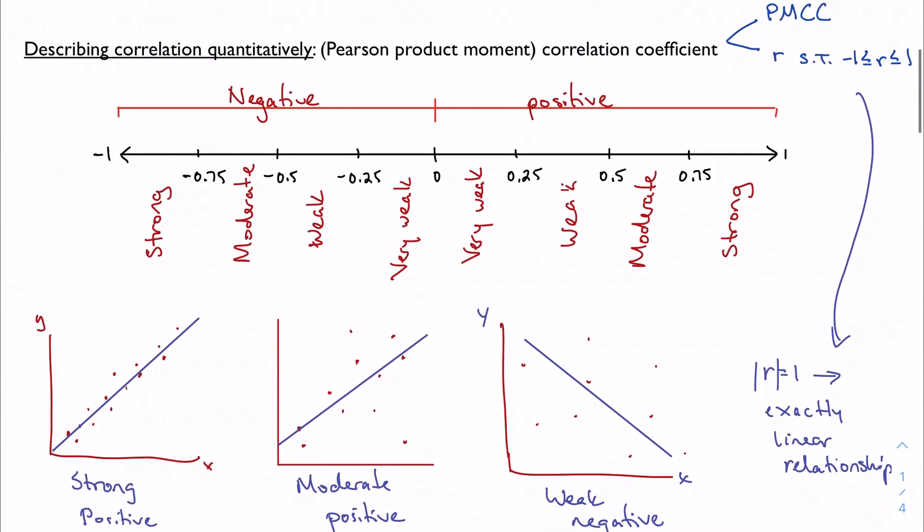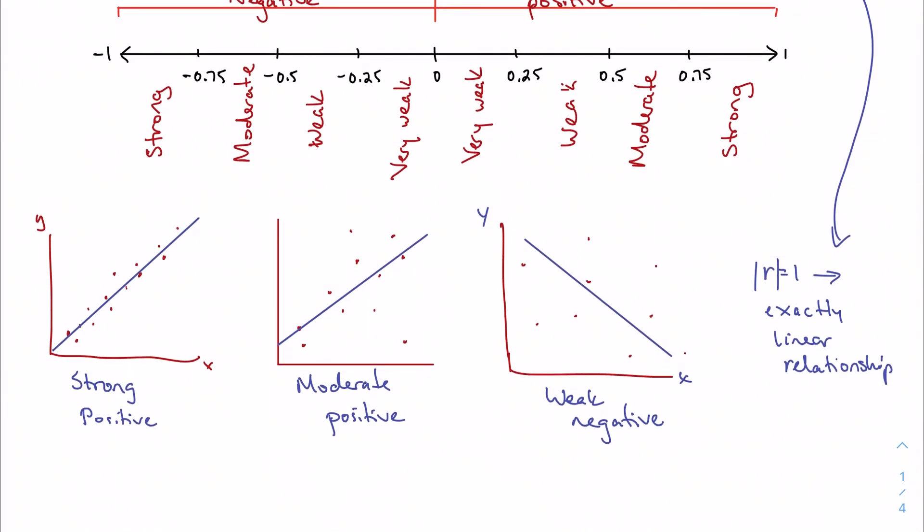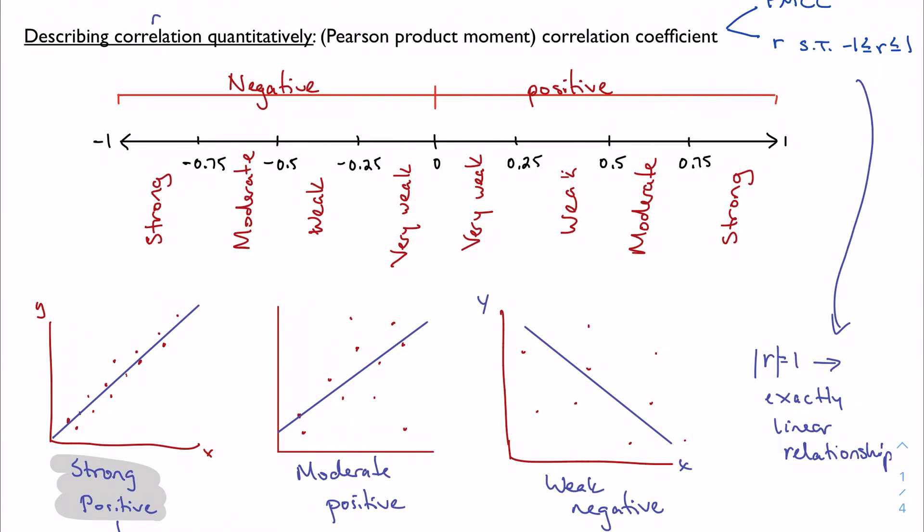So if we're going to talk about correlation quantitatively, we identify the strength and the association. Strong positive, moderate positive, weak negative, strong negative—I always have two words when I describe my correlation.